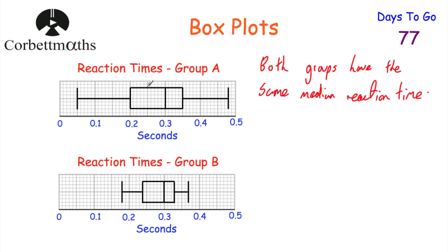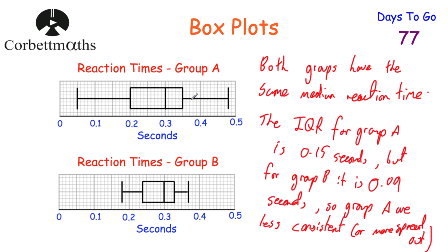Box plots tell us more information beyond the median. The reaction times in group A are more spread out — you can see the lowest and highest values are really quite far apart, whereas in group B they're closer together. I like to compare the interquartile ranges because it excludes outliers. The IQR for group A is bigger than for group B — 0.15 seconds compared to 0.09 seconds. So group A are less consistent than group B, or you could say group A is more spread out than group B.